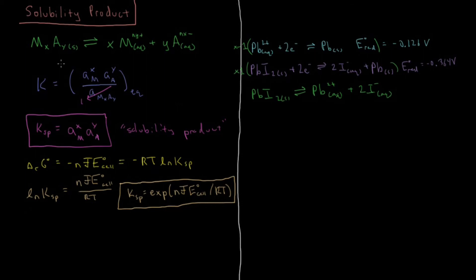Okay this is right in the form of a solubility product. We've got x equals 1, y equals 2 here according to this type of equation. So lead iodide going to lead ions and iodide ions in solution.